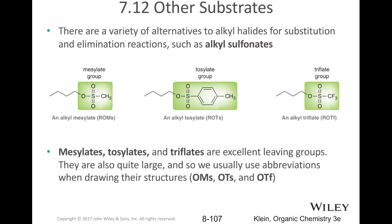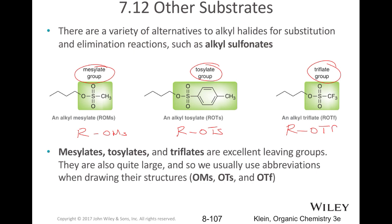The take-home message for students in Chemistry 3101 is: a mesylate group, a tosylate group, and a triflate group. You need to be familiar with all three of these. Instead of having to write these out each and every time in your syntheses or reactions, you can use abbreviations — organic chemists love acronyms. So instead of writing out the full sulfone structure, you can write R-OMs for mesylate, R-OTs for tosylate, and R-OTf for triflate.